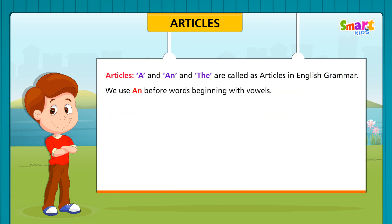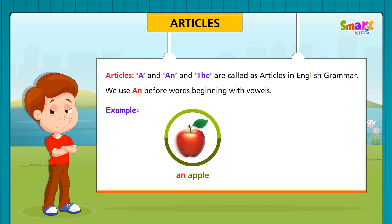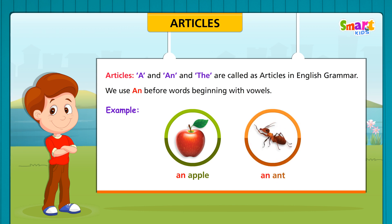We use AN before words beginning with vowels. For example, an apple, an ant.